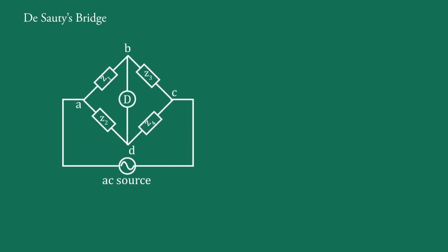Students, the basic bridge is drawn like this. Such a basic bridge, we have already discussed in previous videos. Its balance condition is given as Z1·Z4 equal to Z2·Z3.